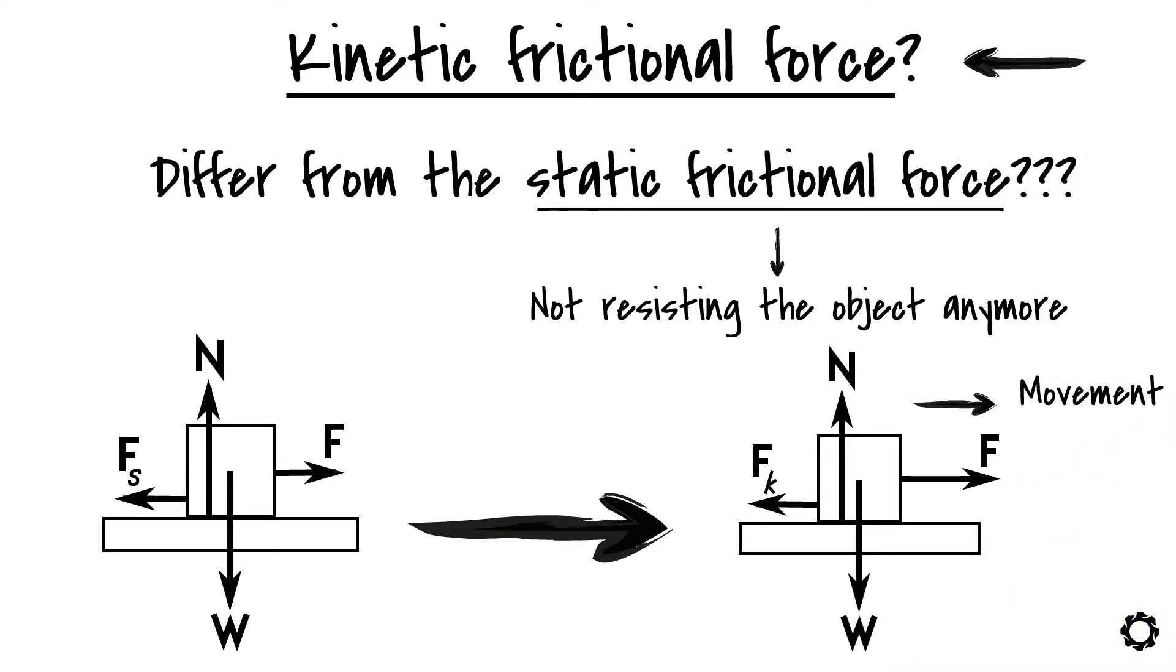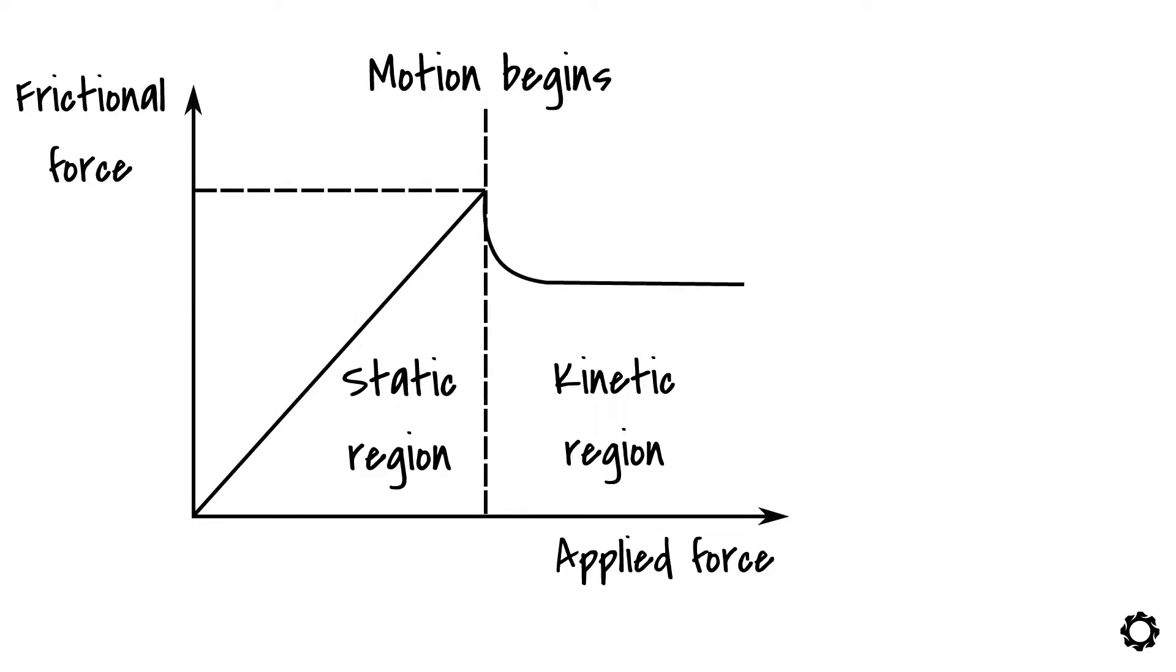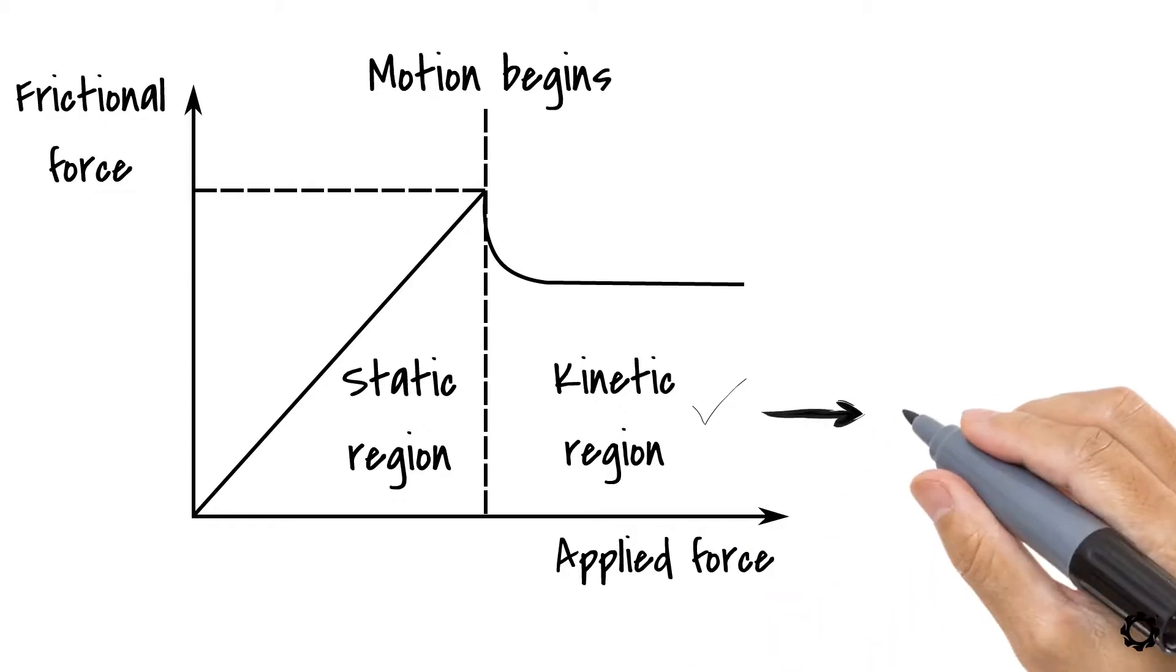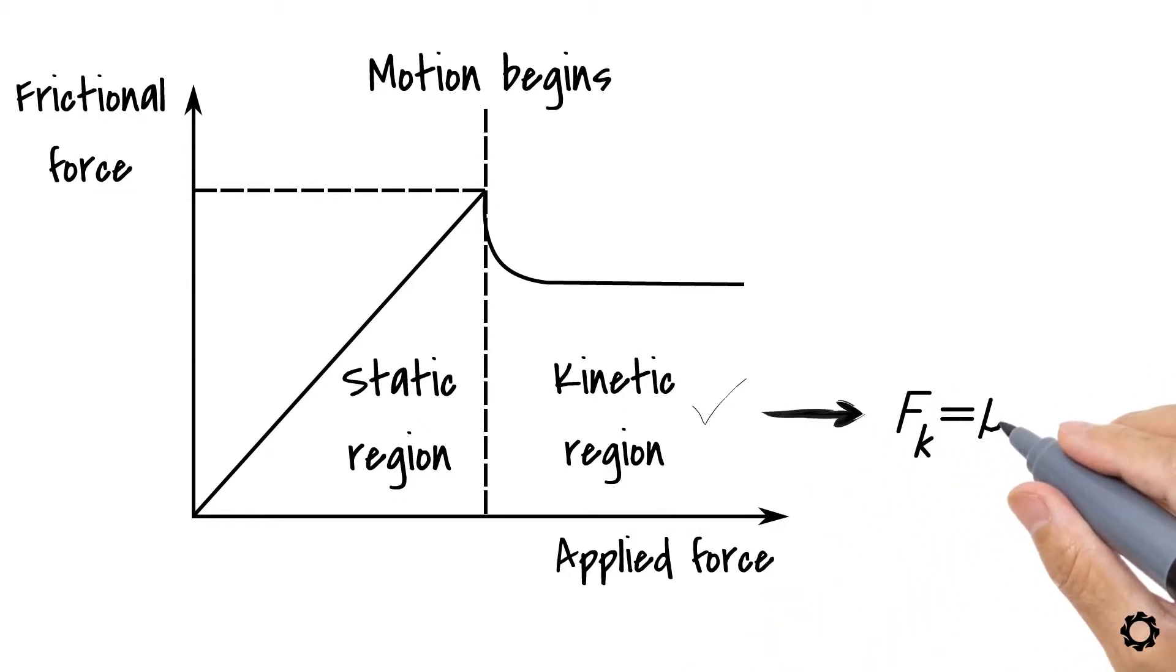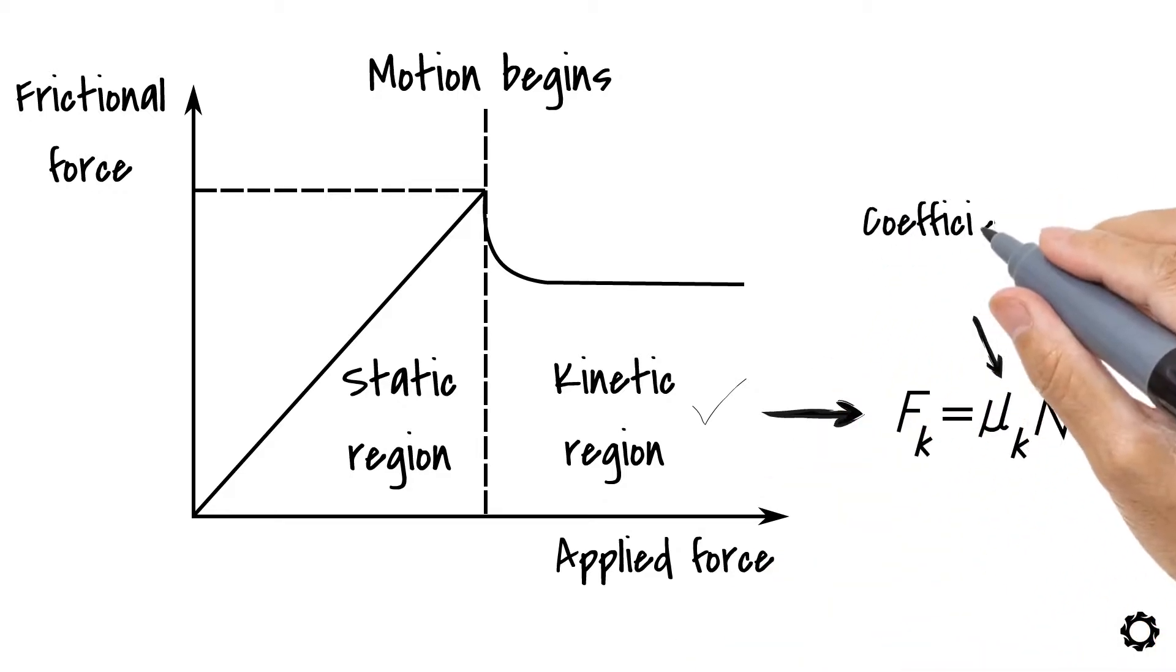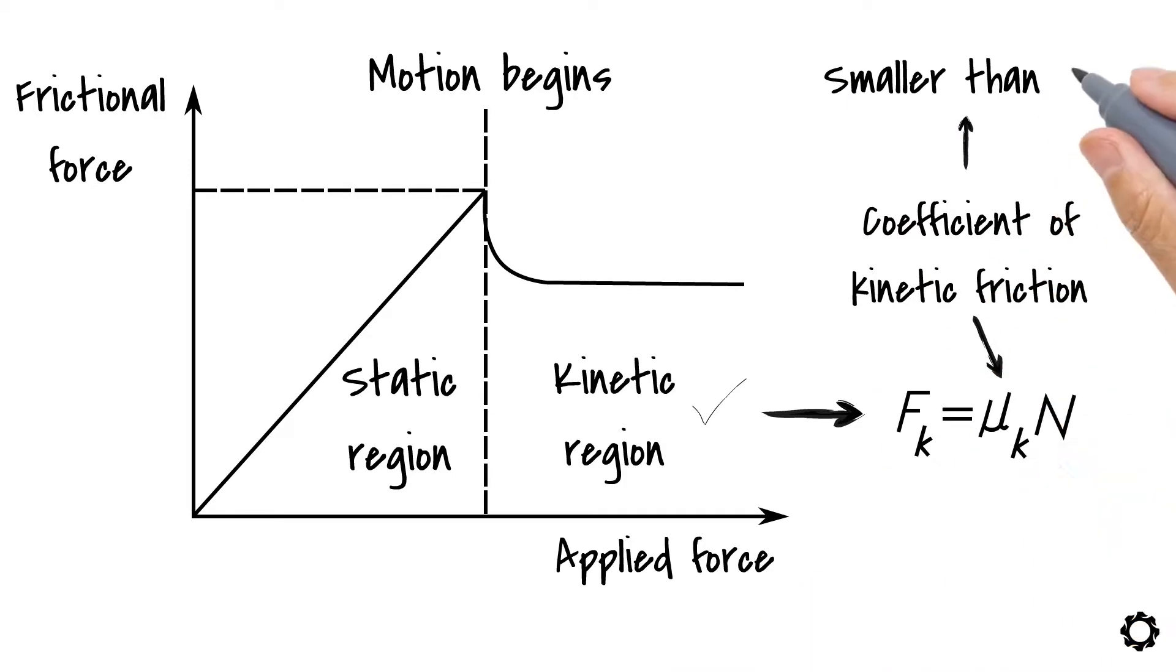Note that the kinetic frictional force is always smaller than the static frictional force. We can solve the kinetic frictional force from the following equation: fk equals mu k times n, where mu k is the coefficient of kinetic friction which is also smaller than mu s.